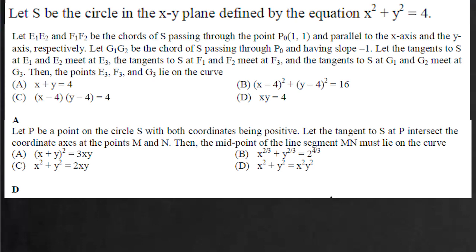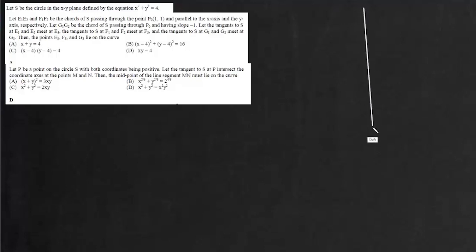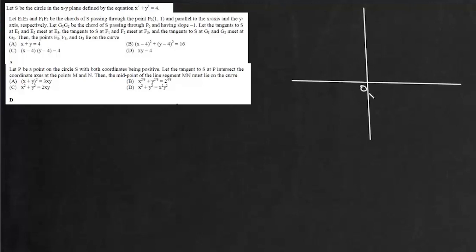We are given a passage in which let S be a circle in the xy-plane defined by the equation x² + y² = 4. So we have this circle with center at the origin and radius equal to 2 units.